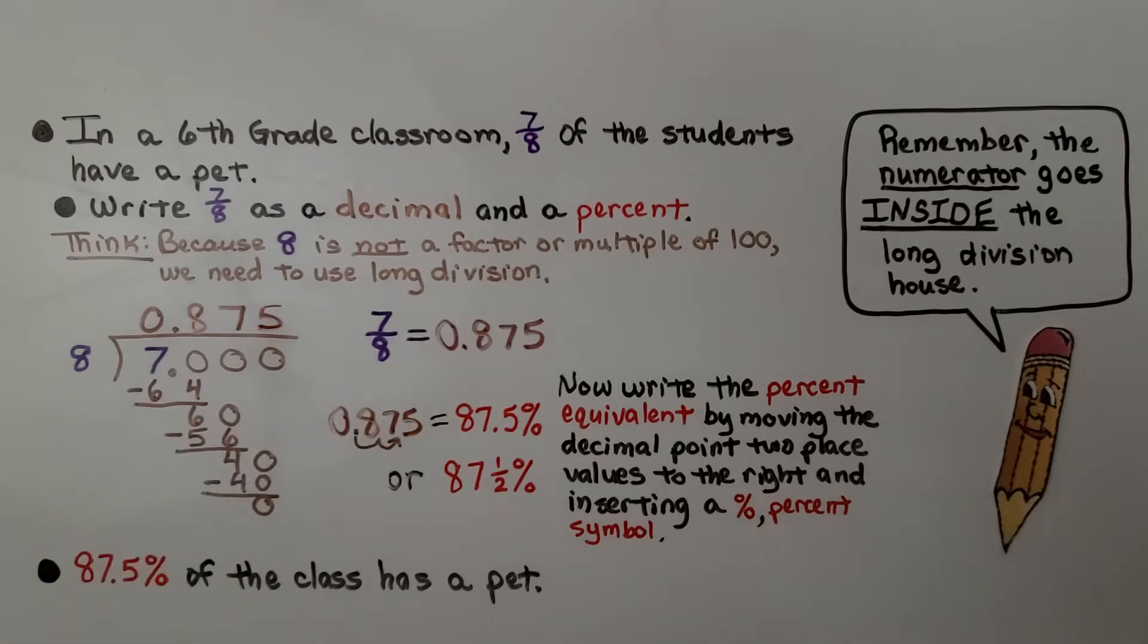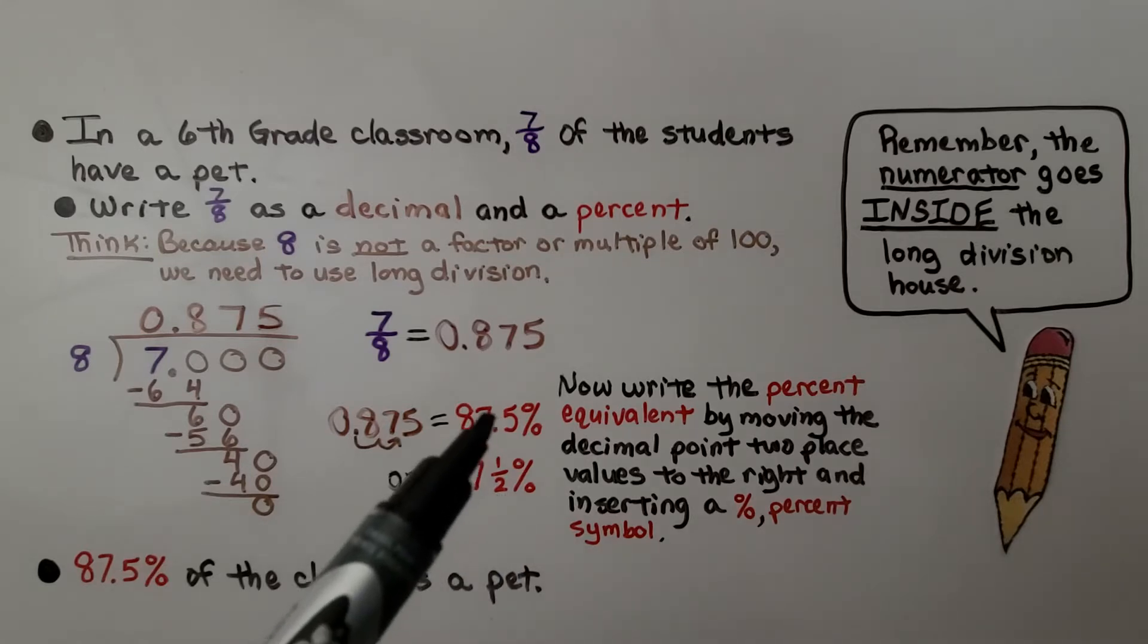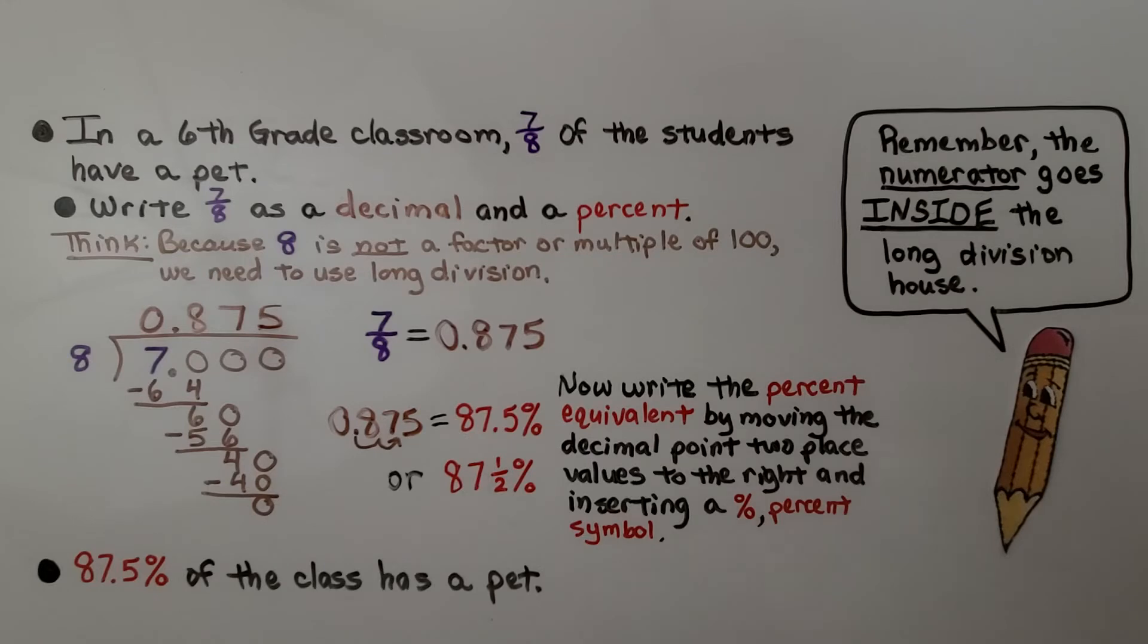Now we can write the percent equivalent by moving the decimal point two place values to the right and inserting a percent symbol. We have 87.5 percent. We can also say it's 87 and a half percent. If you remember from previous lessons, we can have a decimal or fraction inside of a percentage. We know that 87.5 percent of the class has a pet.